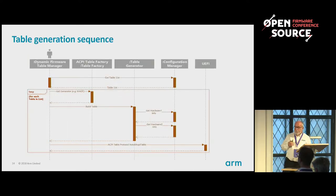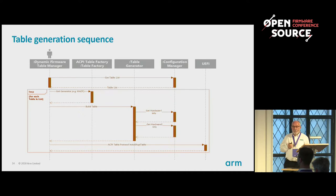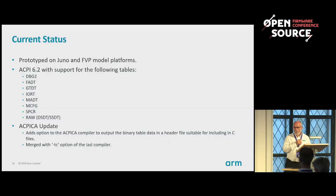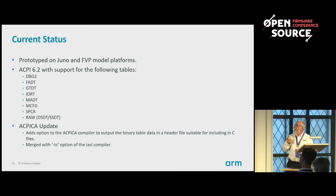The sequence is fairly simple: we start by asking the config manager what tables it wants to build, then for each table we ask for a generator and get the hardware information. Having generated the table, we pass it to the EDK2 framework to give to the operating system. In EDK2 platforms, we have examples for Juno and the ARM FVP models. It's based on ACPI 6.2 and will successfully boot Linux and Windows.